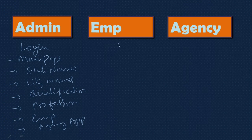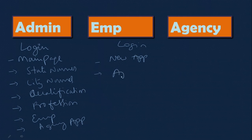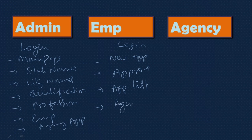For the employee module, employees can log in. Here they can see the new applications that agencies have created. They can check all the details and give approval. Then there is an approved list - what is approved, that list will be there. Then the agency list - who are the agencies registered with us, that list they can view here.